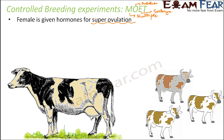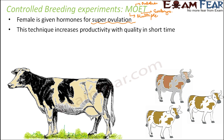Earlier, when only one egg was being released by the female, only one new calf or animal was being produced. Now when you have eight eggs and you put those eggs inside the bodies of eight other cows, at the end of the gestation period, instead of getting one new animal you are actually getting eight new animals. So productivity increased — due to super ovulation, due to the release of multiple eggs, which happened due to the application of hormones. This is known as multiple ovulation embryo technique.